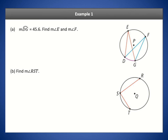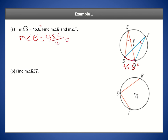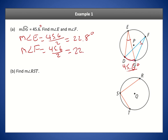In our first example, we're given that arc DG is 45.6 degrees and we want to find angles E and F. The intercepted arc for angle E is arc DG, so we can cut that in half by the inscribed angles theorem to get angle E, which is 22.8 degrees. Similarly, the intercepted arc for angle F is also 45.6 degrees, so angle F is also 22.8 degrees — the same as angle E.